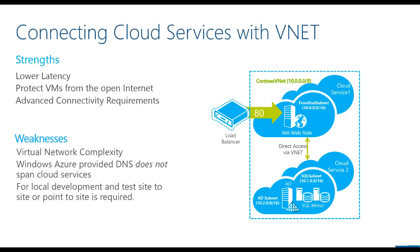The other option for connecting cloud services to a virtual machine backend is by using a virtual network. The strengths in this approach are numerous: there are fewer hops since you're not going through the load balancer, equating to lower latency. There are no public endpoints to secure, so from a security perspective this is a simpler approach. Since the cloud service and virtual machines are on the same network, this allows applications that have advanced connectivity requirements with lots of port ranges — such as DCOM and Active Directory — to work. Some weaknesses: virtual networks are slightly more complex to configure. Without deploying your own DNS server, connection strings will have to be based on the IP address of the virtual machine, because Windows Azure DNS service does not span cloud services. Also, if you'd like to do local development against a virtual machine in a virtual network from a machine outside the virtual network, you'd either have to open a public endpoint, deploy point-to-site connectivity, or site-to-site connectivity for multiple developers.